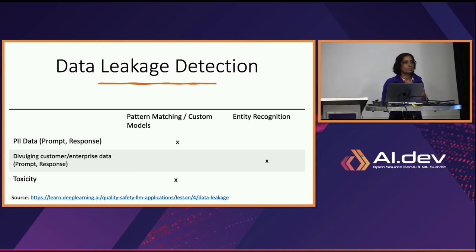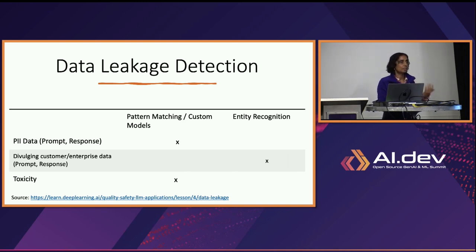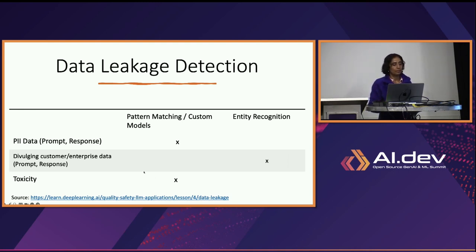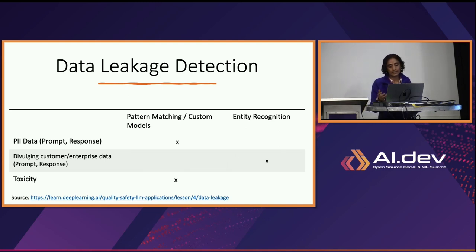For data leakage, this is standard stuff that products already do in API security. You use either standard libraries to match personally identifiable information, or write a simple RNN model for pattern matching. The same applies to toxicity. You may also want entity recognition, because your large language model may leak your product name, project names, or employee names. There are standard libraries available for entity recognition as well.